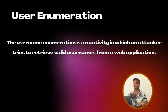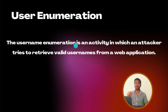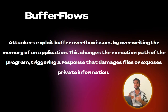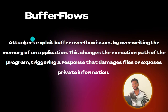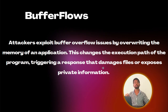User enumeration is an activity in which an attacker tries to retrieve valid usernames from an application. Next is buffer overflow — which is nothing but overwriting the memory of an application. Attackers exploit buffer overflow issues, which changes the execution path of the program, triggering a response that damages files or exposes private information.